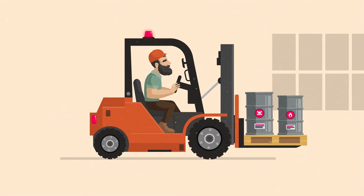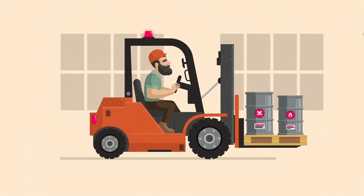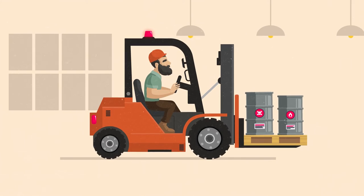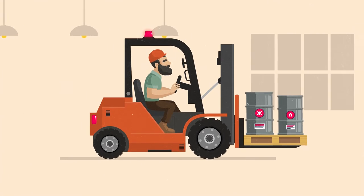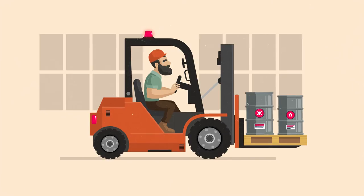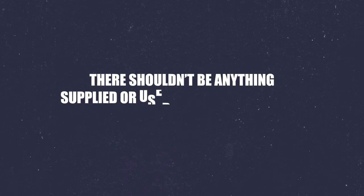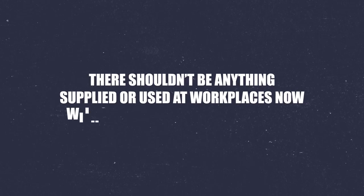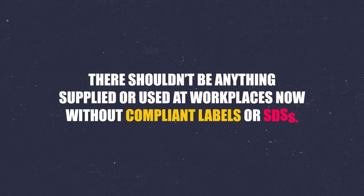Any workplace with outdated labels on chemical containers should either relabel the chemicals in accordance with GHS-7 requirements or appropriately dispose of chemicals and their associated containers. There shouldn't be anything supplied or used at workplaces now without compliant labels or SDSs.